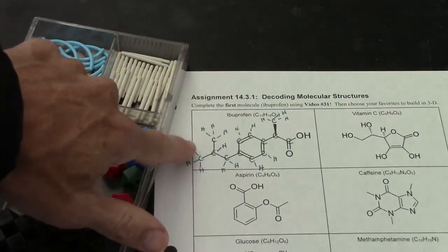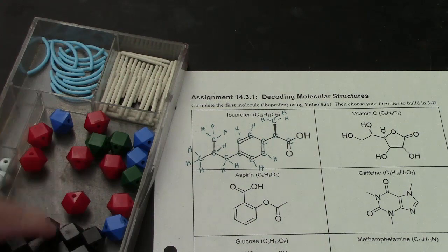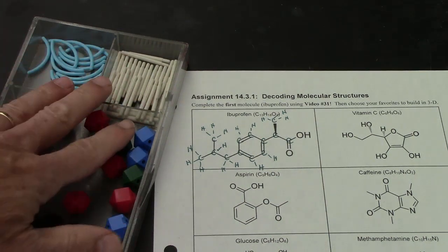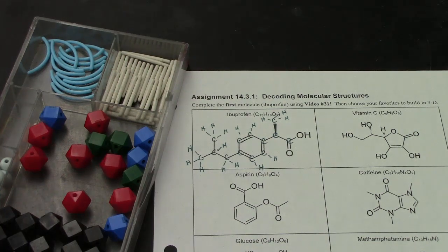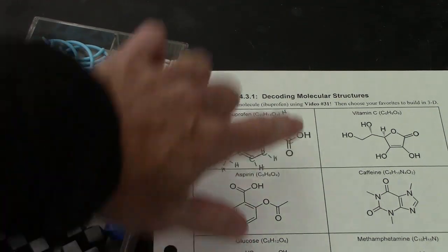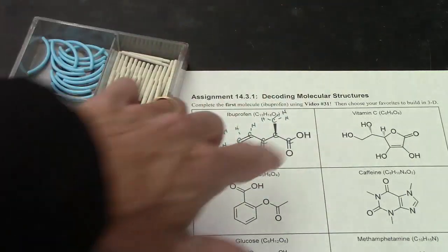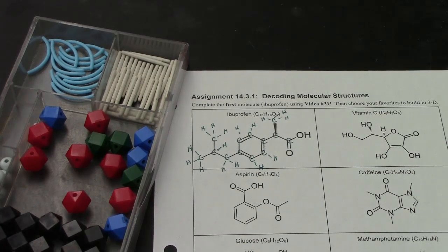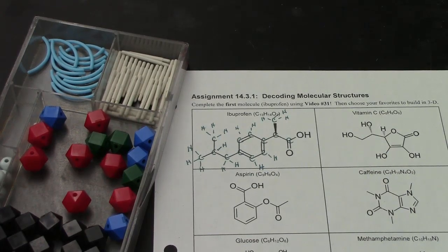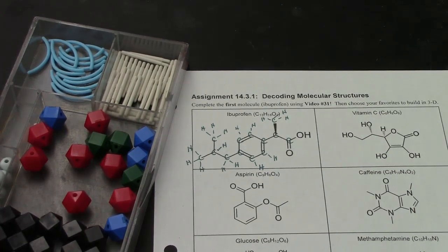So from this flat picture, build it in three dimensions using the model kit, and then you'll see the true structure of ibuprofen. After that, it says choose your favorites - you've got 18 choices on here. You can't do all of them in this period, just choose a few that catch your interest and that will be suitably challenging for your skill level.